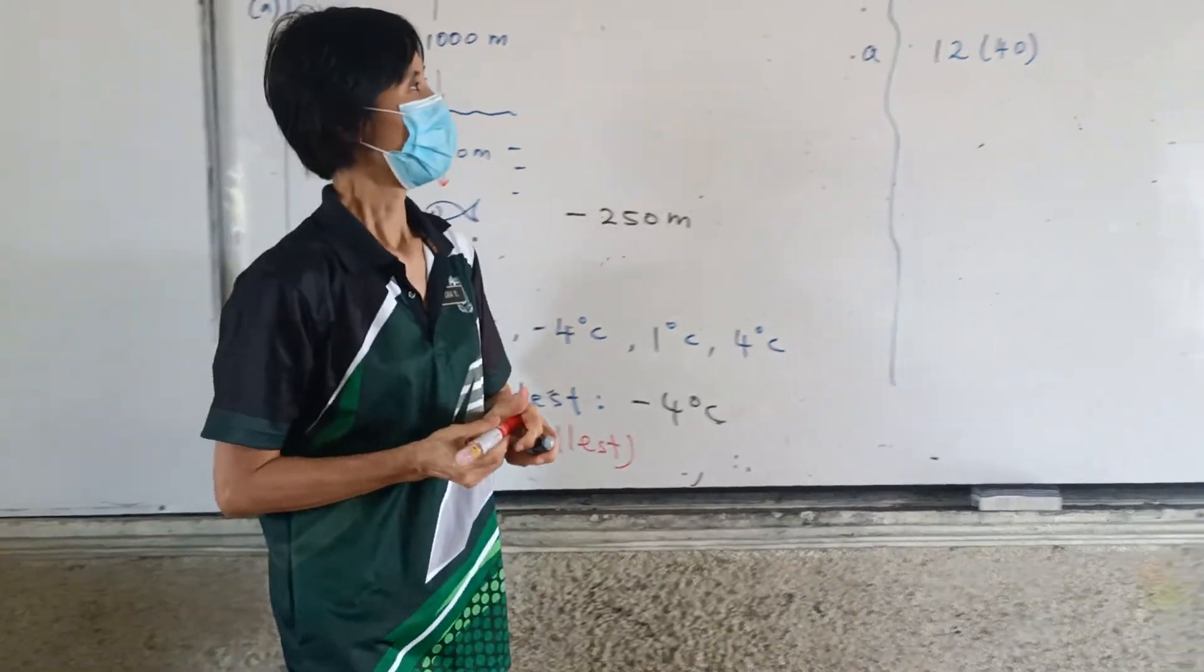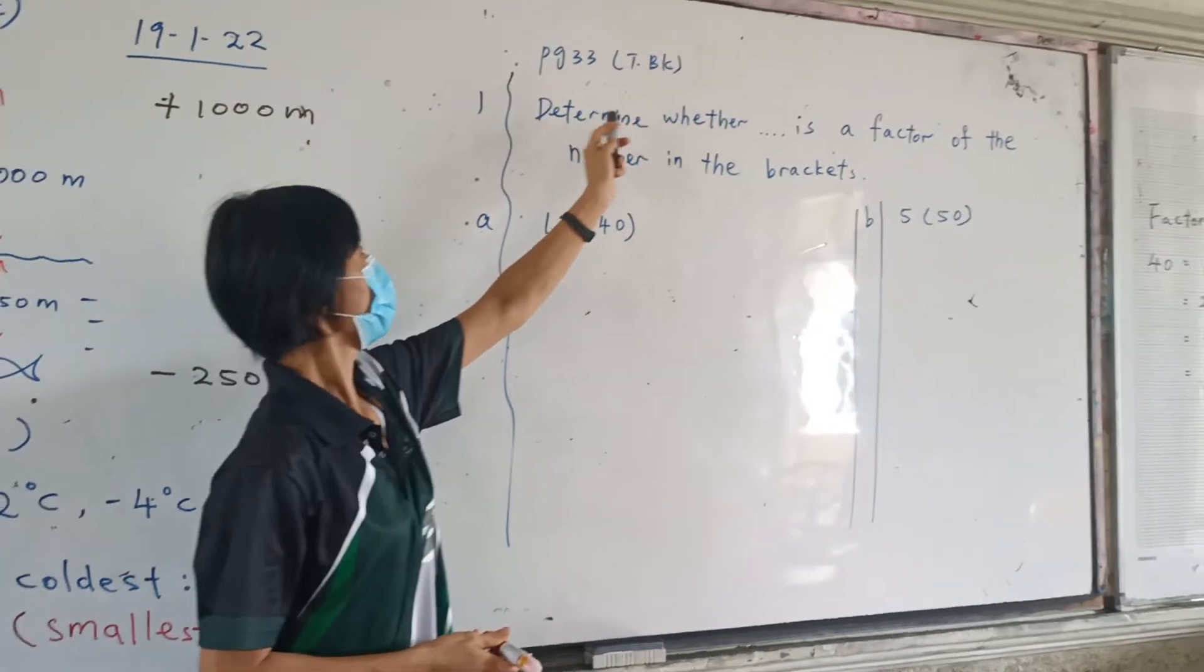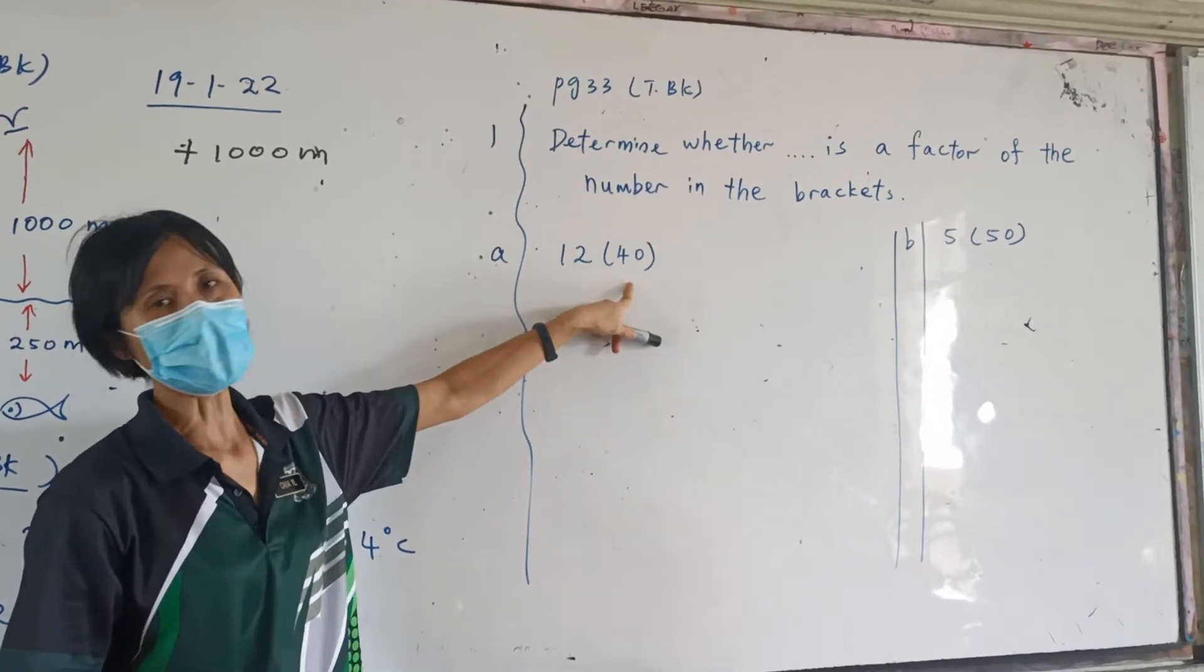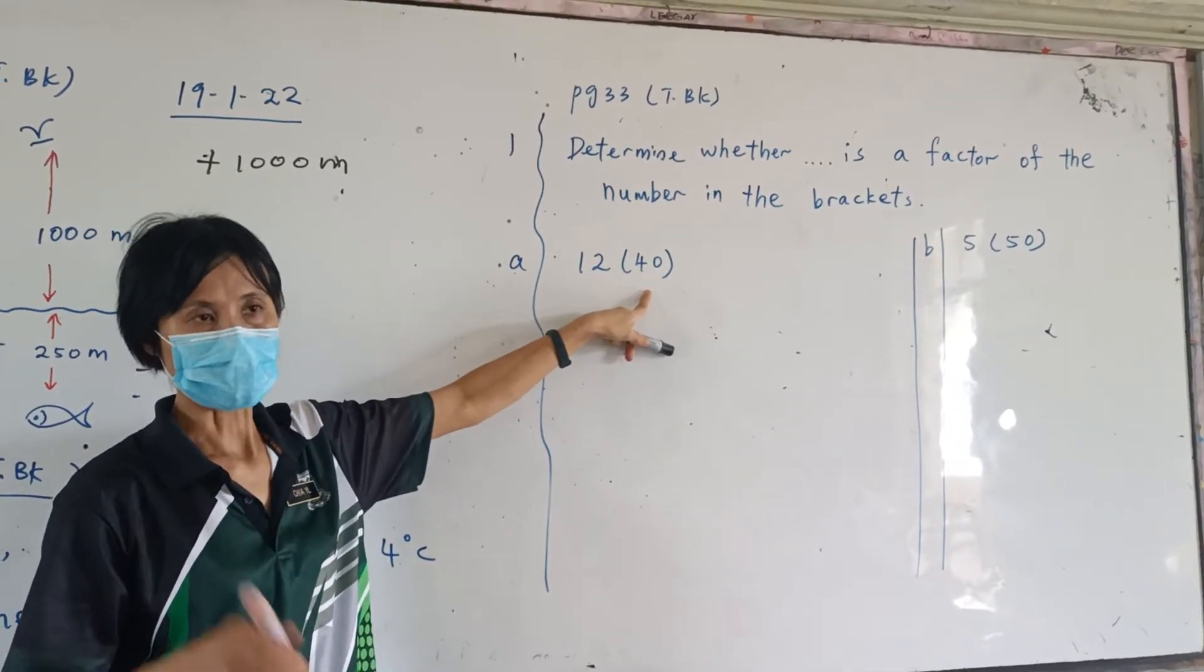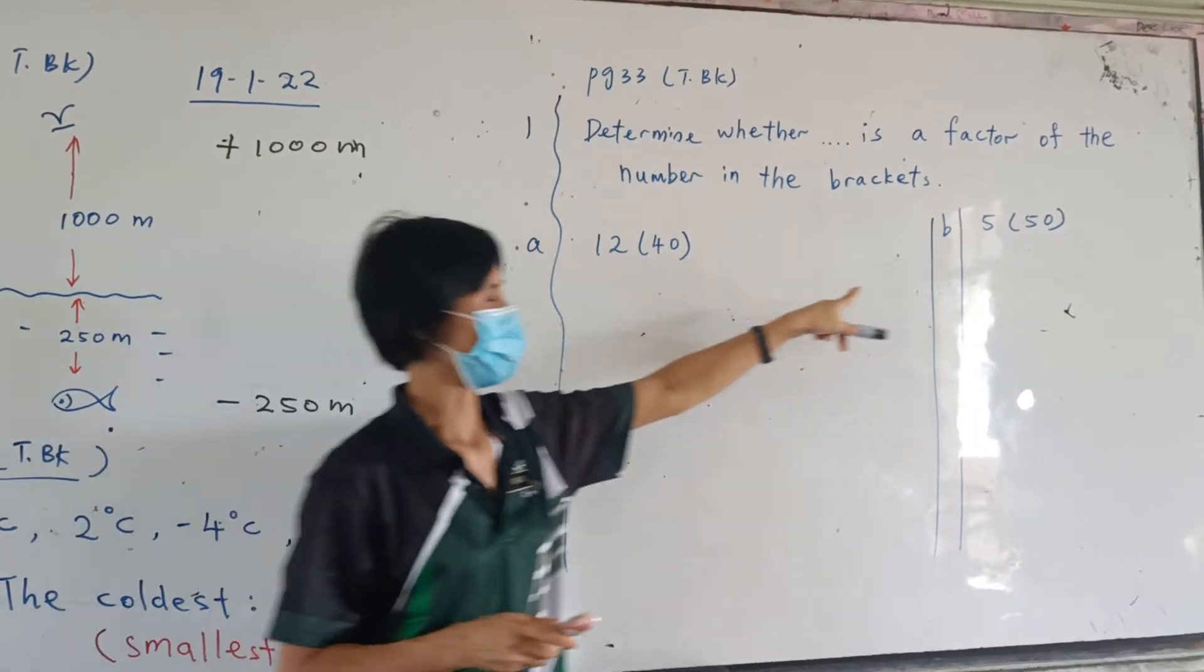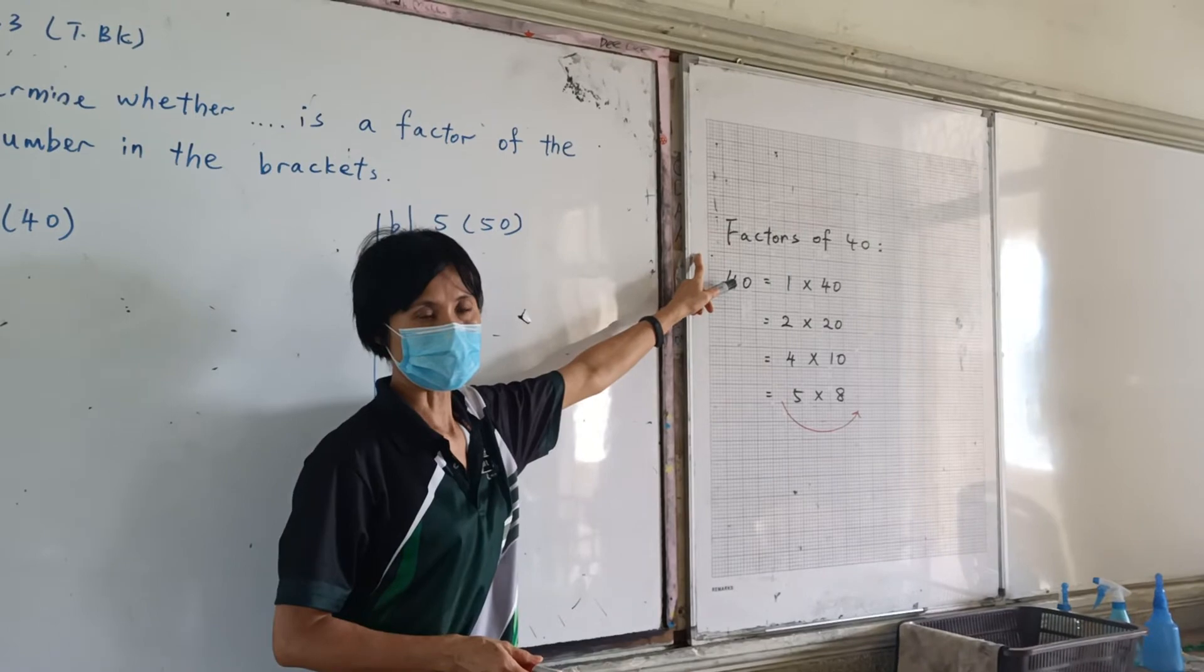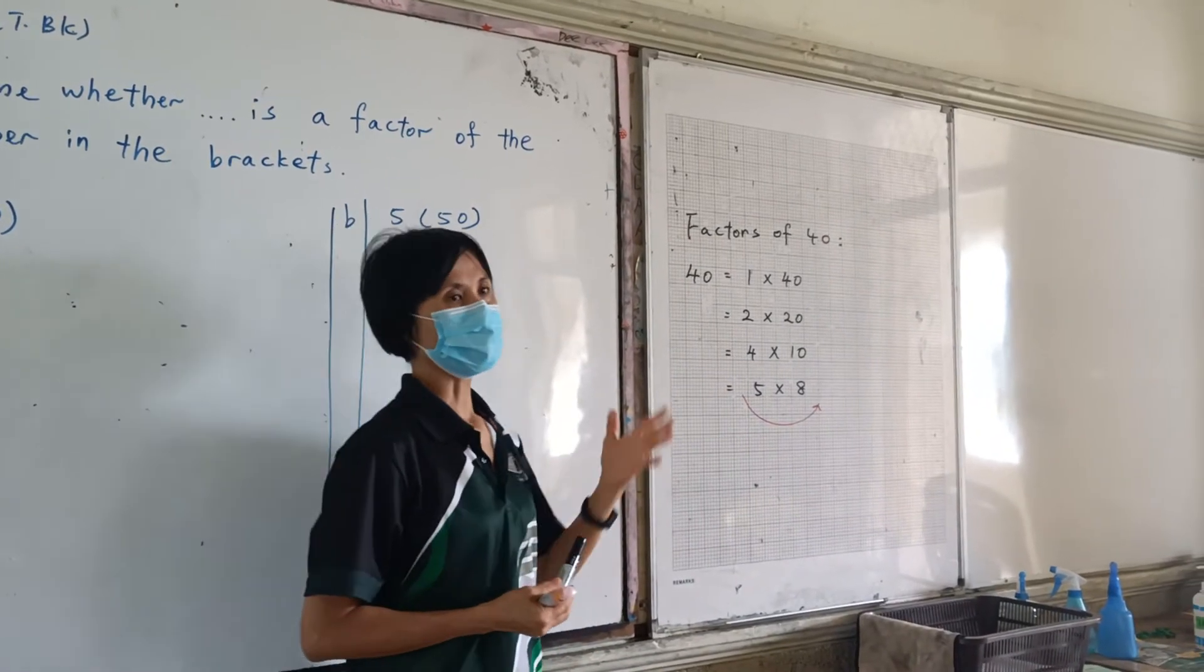This one. Page 33. They ask determine whether this number here is a factor of the number in the bracket. Remember what are the factors? The factors of 40.